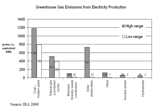Climate change mitigation consists of actions to limit the magnitude or rate of long-term global warming and its related effects. Climate change mitigation generally involves reductions in human emissions of greenhouse gases. Mitigation may also be achieved by increasing the capacity of carbon sinks, e.g., through reforestation.